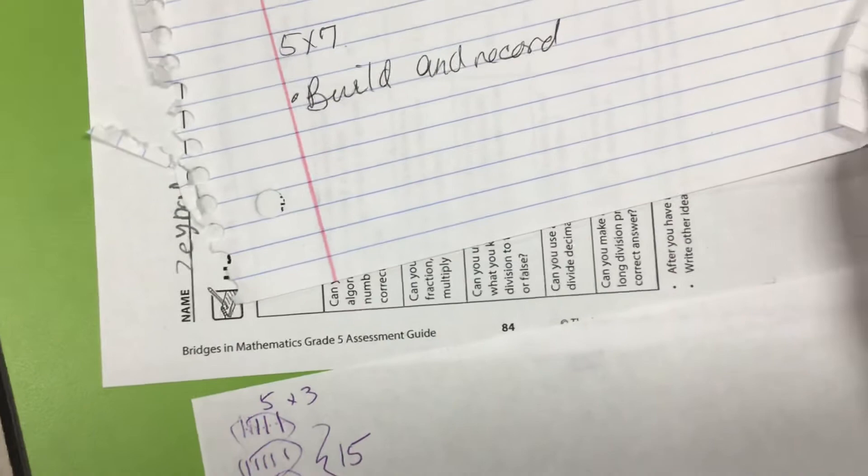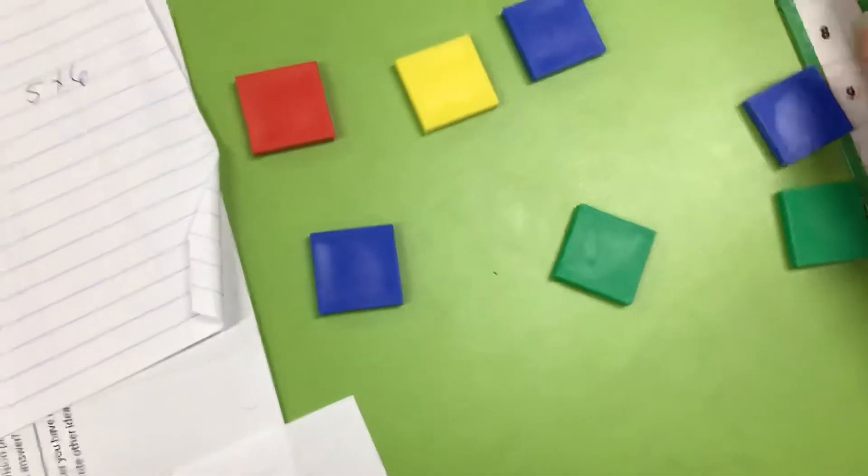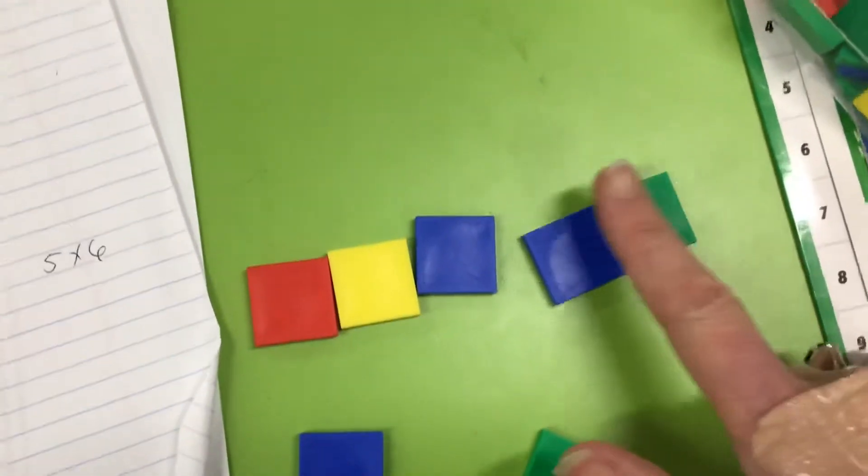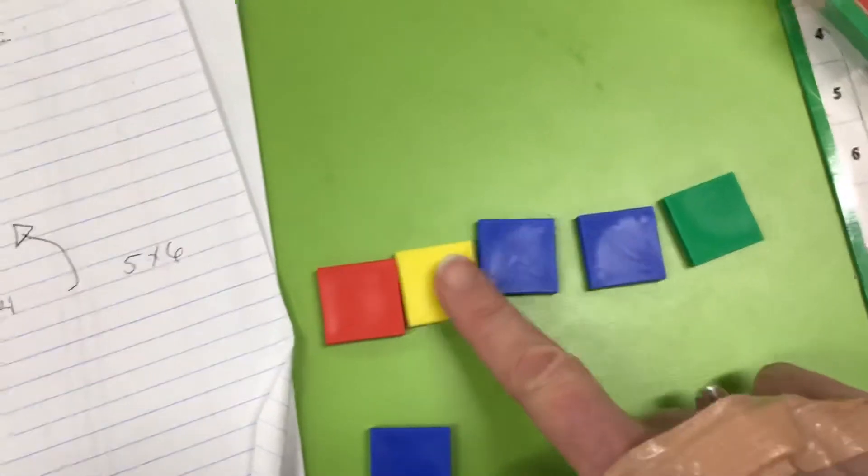And I'm going to do 1, 2, 3, 4, 5. A lot of stuff out here. 1, 2, 3, 4, 5. There we go. 5 columns. And now how many rows do I need?